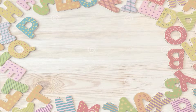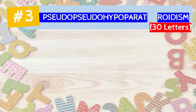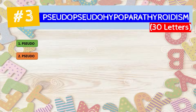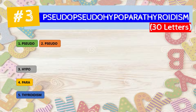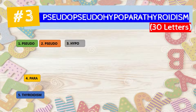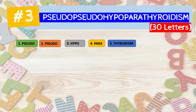Next is number three. It is a 30-letter word called 'pseudopseudohypoparathyroidism.' Once again: pseudo — pseudo — hypo — parathyroidism. It is technically a medical term, often abbreviated as PPHP.